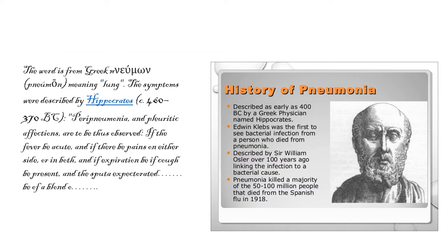As far as the history of pneumonia is concerned, as early as 400 BC Hippocrates had described pneumonia: 'Peri pneumonia and pleuritic affections — if the fever be acute, and if there be pains on either side, and if there is expiration which is prolonged with cough and sputa.' They recognized this syndrome, and whosoever got pneumonia largely died because there was no treatment.